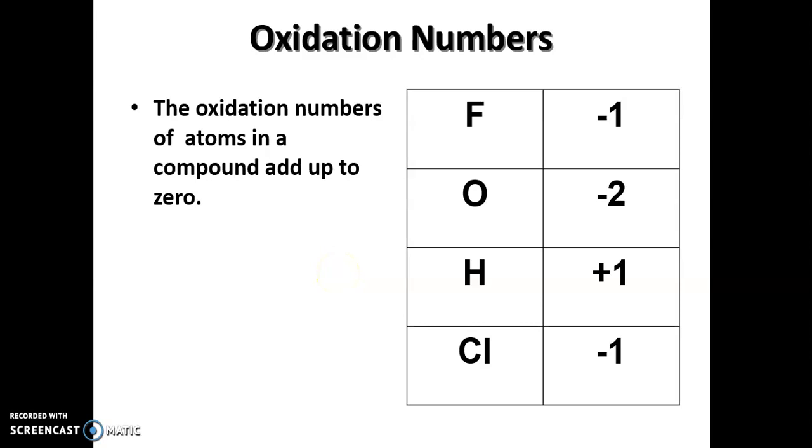In this example: fluorine's oxidation number is -1, oxygen is -2, hydrogen is +1, and chlorine is -1. The overall oxidation number of atoms in a compound is 0, unless a charge is indicated, then the compound's oxidation number will be that indicated value.